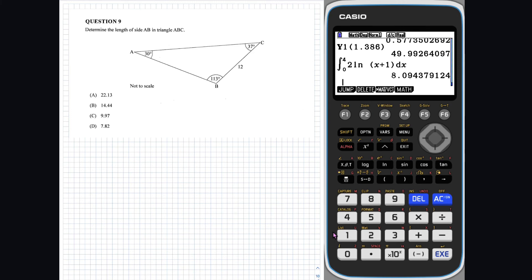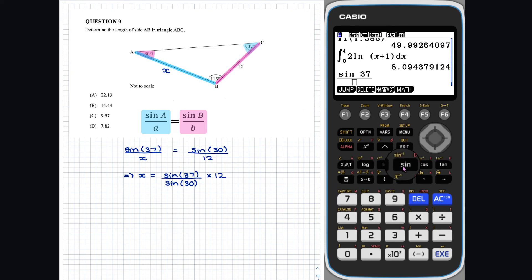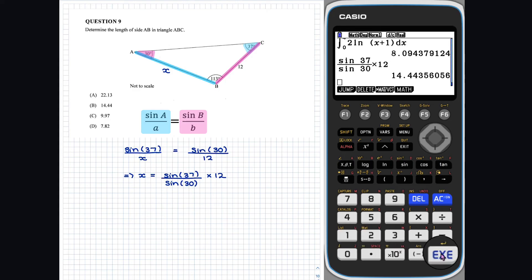Question 9. Let the length of side AB equal x. Using the sine rule, we can write... Before we enter this into our calculator, we need to set our calculator to degrees. So the length AB is 14.44, option B.